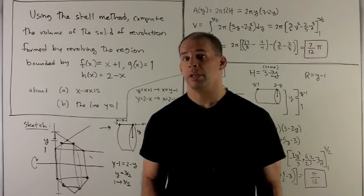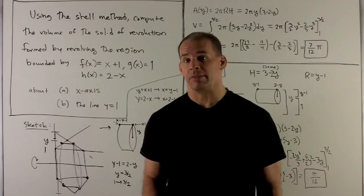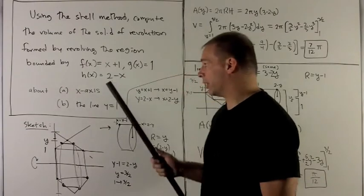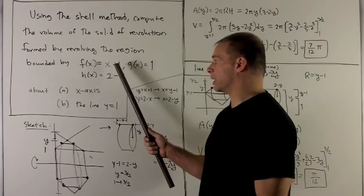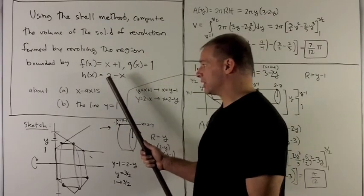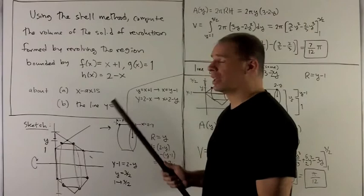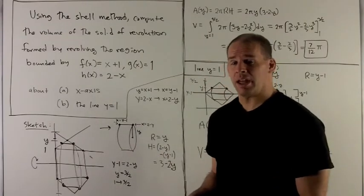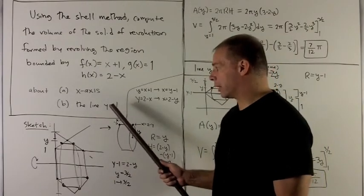Using the shell method, compute the volume of the solid of revolution given by revolving the region bounded by f(x) = x+1, g(x) = 1, and h(x) = 2-x, about the x-axis, and then about the line y = 1.